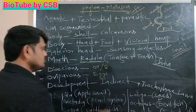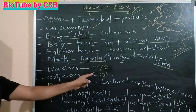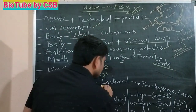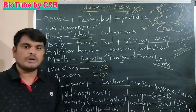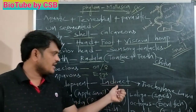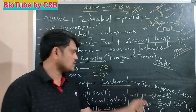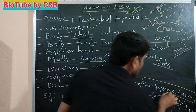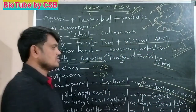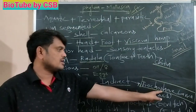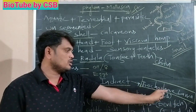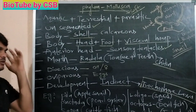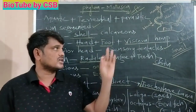Development is indirect. The larva present is the trochophore larva. By the presence of this larva, it is confirmed as indirect development. Let me give the best examples — you can observe the screen.